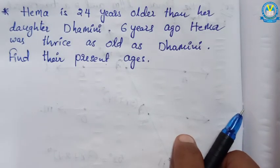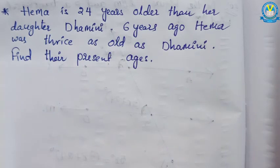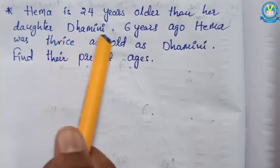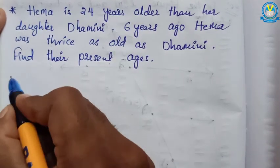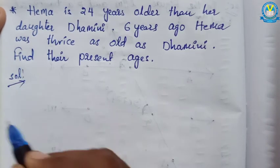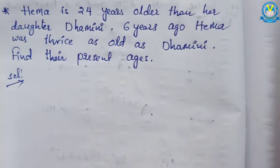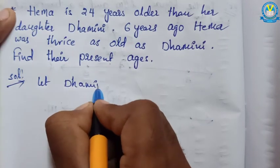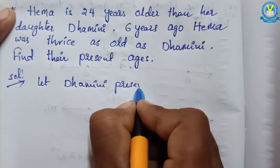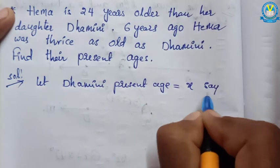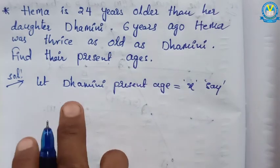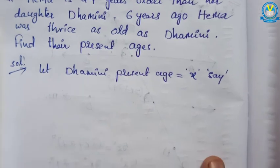Observe this example. Hama is 24 years older than her daughter Domini. Six years ago, Hama was thrice as old as Domini. Find their present ages. We don't know their present ages, so let the present age of Domini be x.